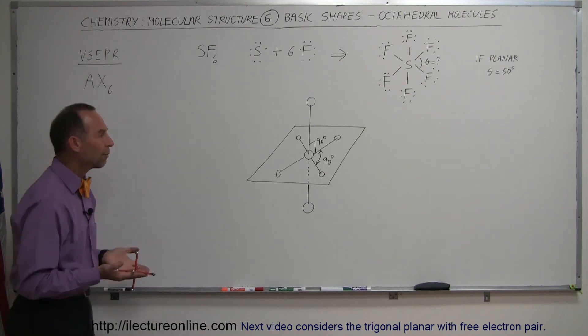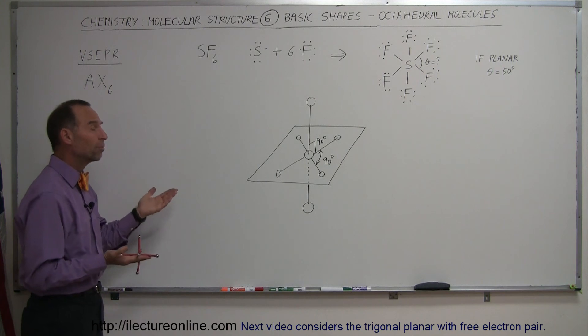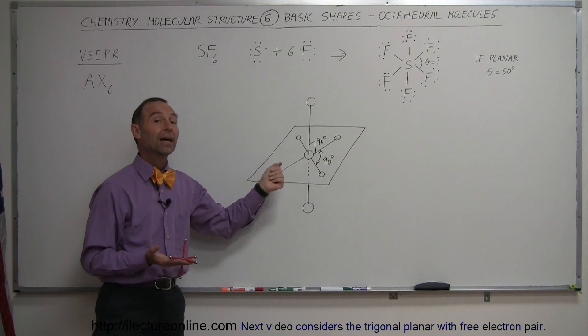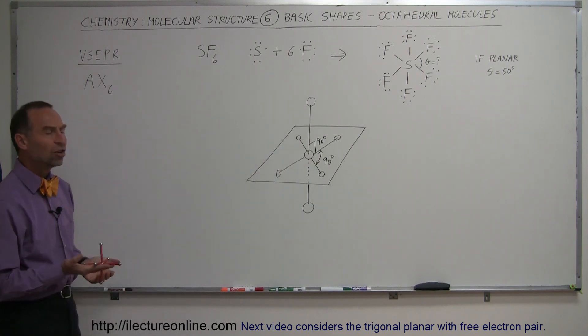So these are the basic shapes that we've gone through so far. Now what we're going to do next is look at these basic shapes and see how they might change when some of these are replaced by free electron pairs. We haven't looked at those yet except for the water molecule.